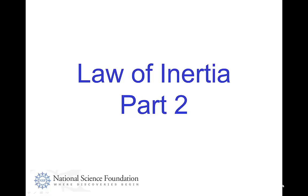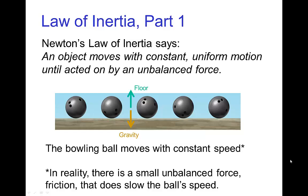Law of Inertia, part two. So in part one, we saw that Newton's Law of Inertia, which is also known as Newton's first law of motion, says that an object moves with constant uniform motion until acted on by an unbalanced force.